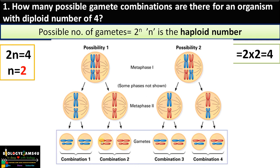In another gamete there is a long chromosome of homologous chromosome pair 1 in red color and the short one in red color. In another case there will be a long blue-colored chromosome of homologous chromosome pair 1 and the short red-colored chromosome of chromosome number 2. And the reverse: the long red-colored chromosome of chromosome number 1 and the short blue-colored chromosome of homologous chromosome 2.